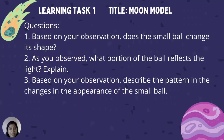After performing the task, answer the following questions. Number 1 — Based on your observation, does the small ball change its shape? Number 2 — What portion of the ball reflects the light? Explain. Number 3 — Based on your observation, describe the pattern in the changes in the appearance of the small ball.